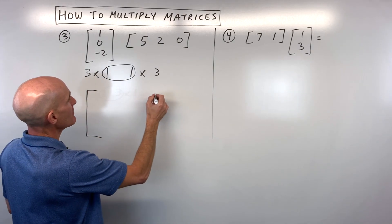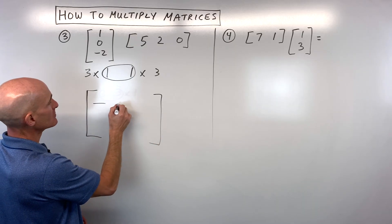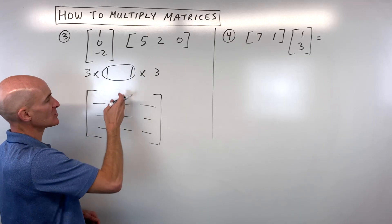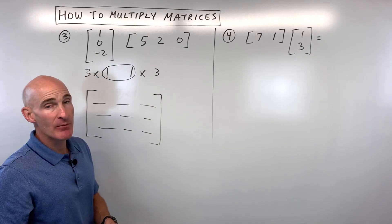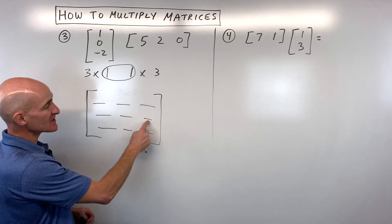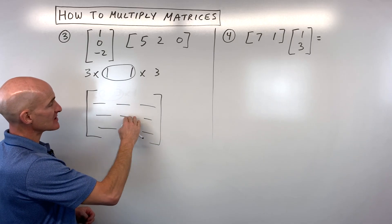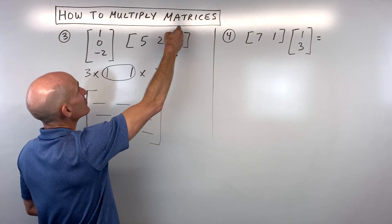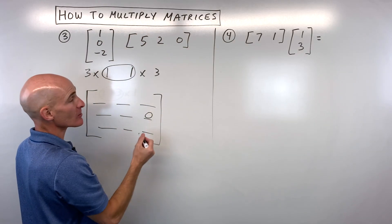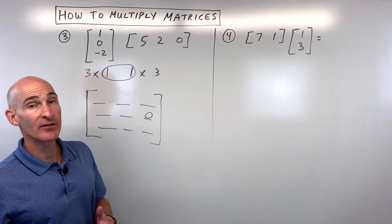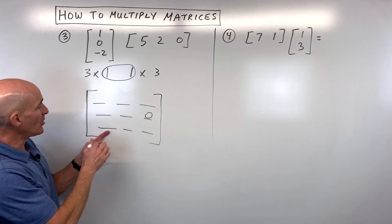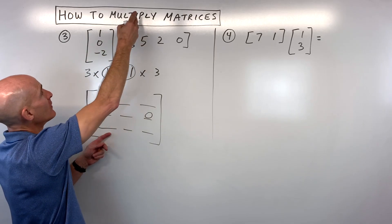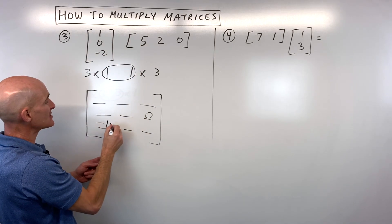A three by three means three rows and three columns. Sometimes you don't need to find the whole matrix — you just need one element. For example, the element in the second row, third column: take the second row, which is zero, times the third column, which is zero — that's zero. Or the third row, first column: negative two times five is negative ten. Here there's nothing to add since you only have one element in the row and one in the column.